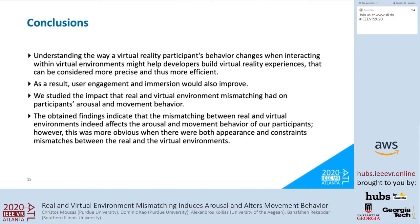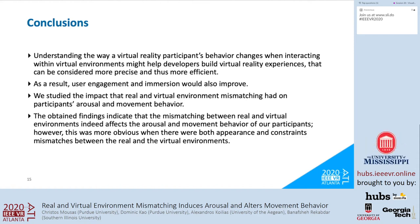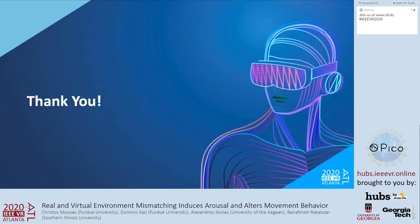Understanding the way a VR participant's behavior changes when interacting within virtual environments that do not match the appearance and constraints of the real ones might help developers build VR experiences that are more precise and efficient. In this project, we studied the impact that real and virtual environment mismatching had on participants' arousal and movement behavior. Our findings indicate that mismatching between real and virtual environments indeed affects arousal and movement behavior, most obviously when there were both appearance and constraints mismatching between the real and virtual environments.